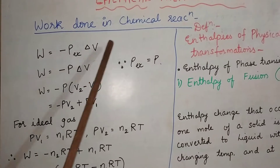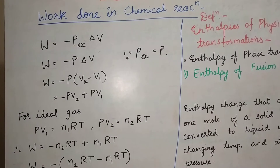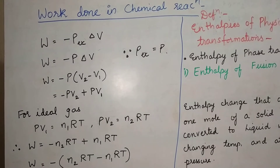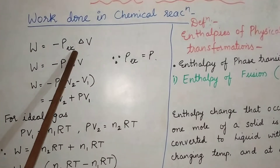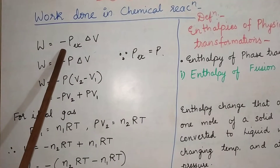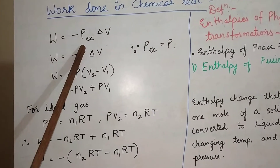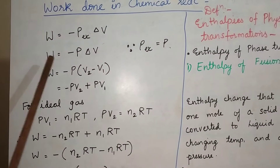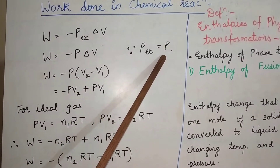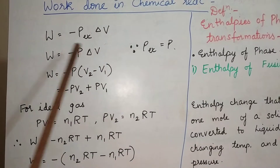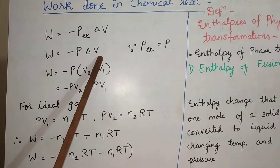Today's topic is about the work done in chemical reactions. We know the expression for work done: W is equal to minus P external pressure into delta V. The minus sign indicates that this is the work of expansion — the system is doing work on the surroundings. If we assume external pressure is the same as pressure P, then we can write W is equal to minus P into delta V.